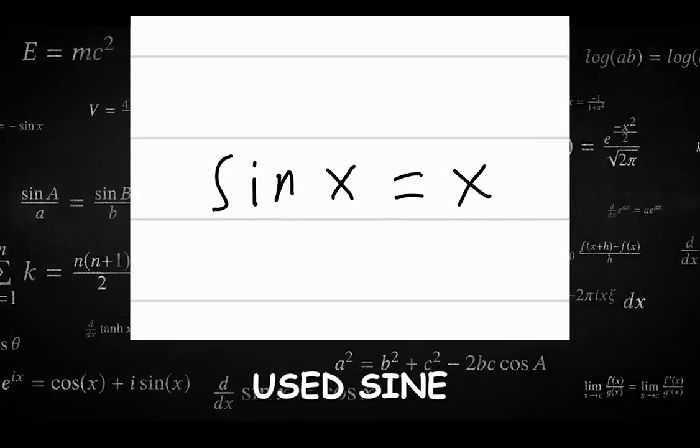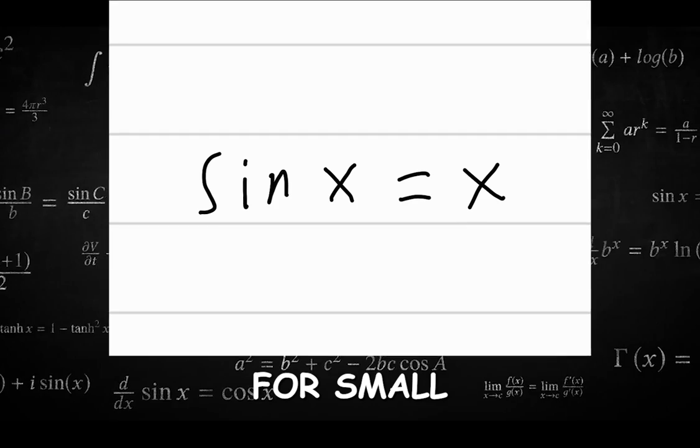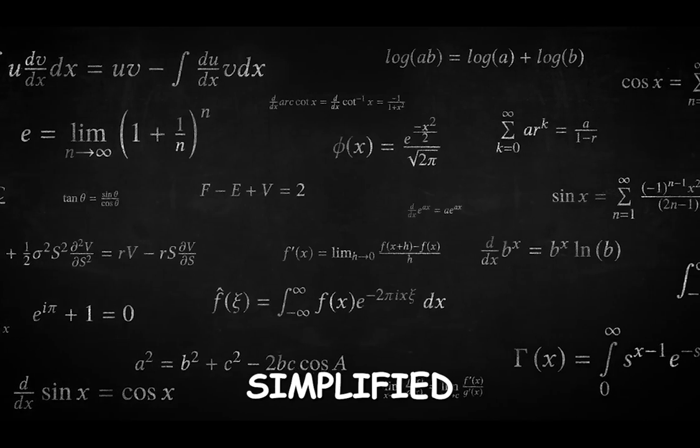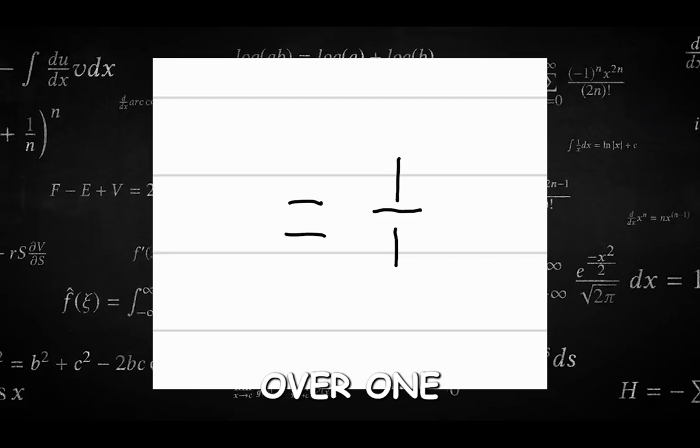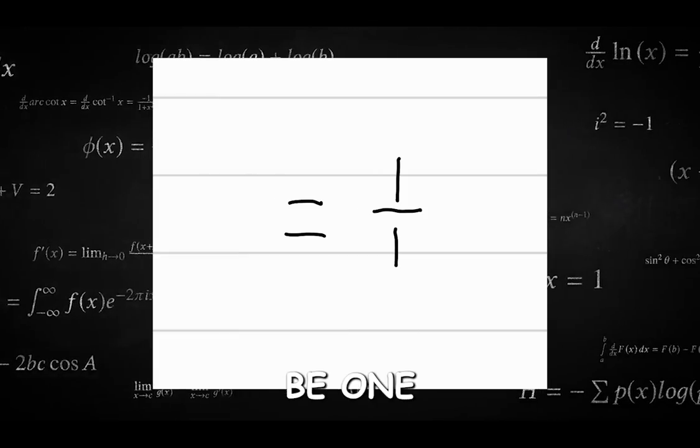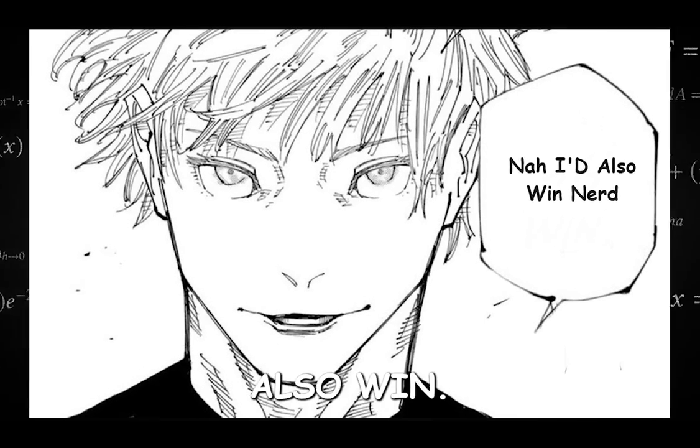The engineer used sine x equals x for small values of x and simplified the equation from x over x to 1 over 1 and found the limit to also be 1 and said, nah, I'd also win.